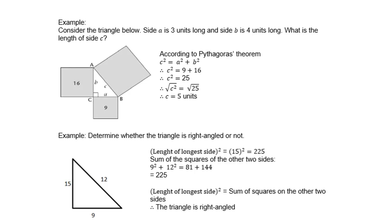Let's look at an example. Consider the triangle below: side a is 3 units long, side b is 4 units long. What is the length of side c? The area on b will be 4 squared, which is 16, and the area on a will be 3 squared, which is 9. So c squared equals a squared plus b squared: c squared equals 9 plus 16, which is 25. Therefore, c is the square root of 25, which is 5 units.